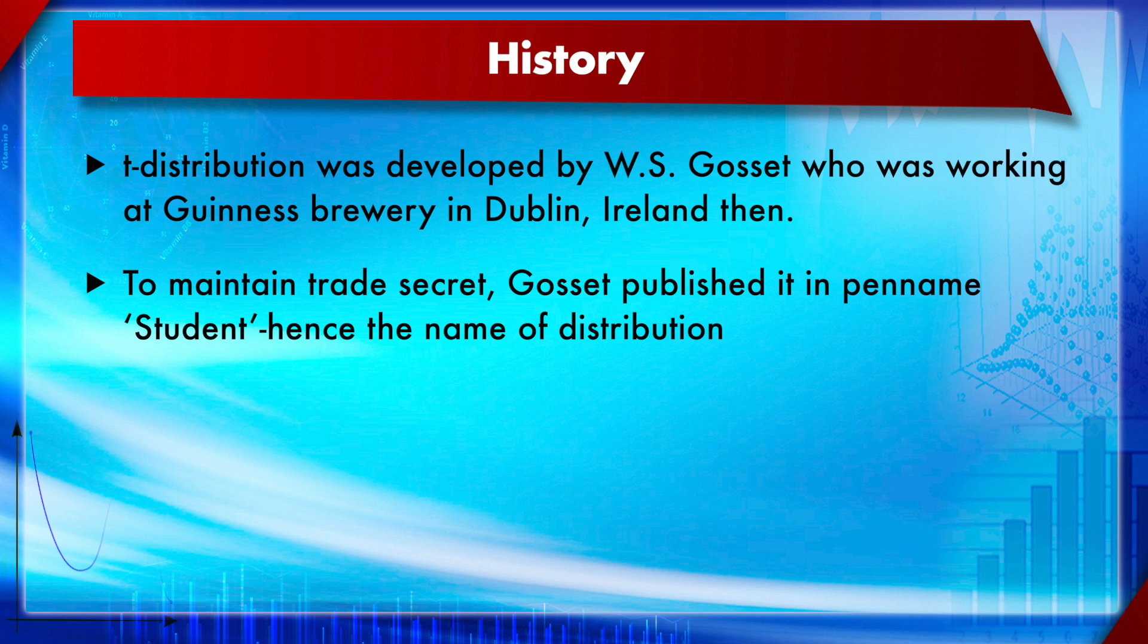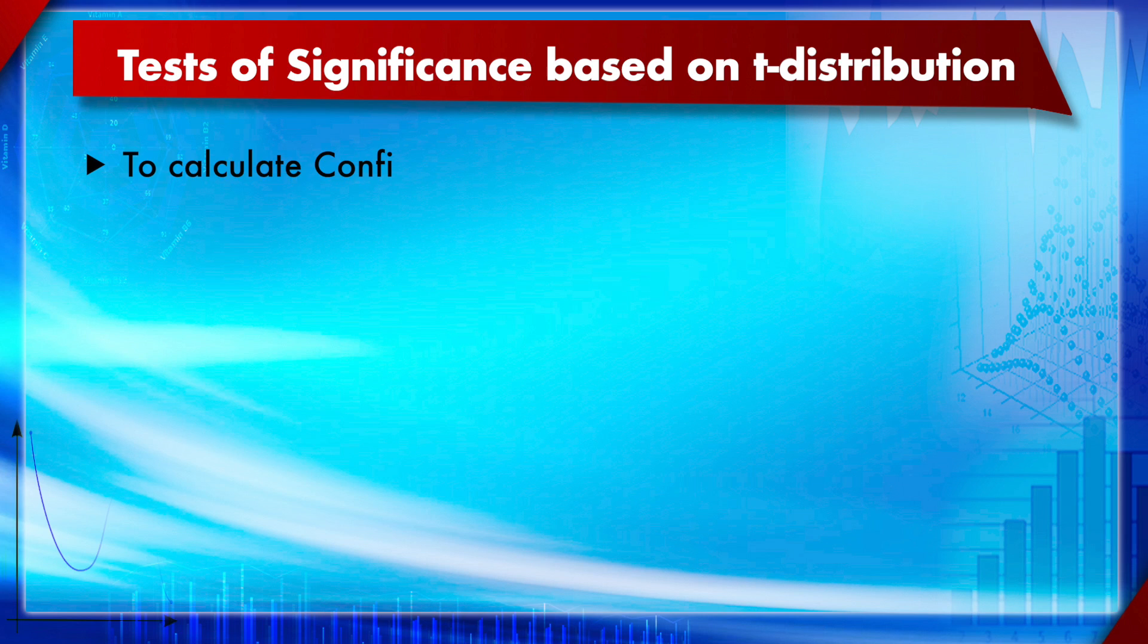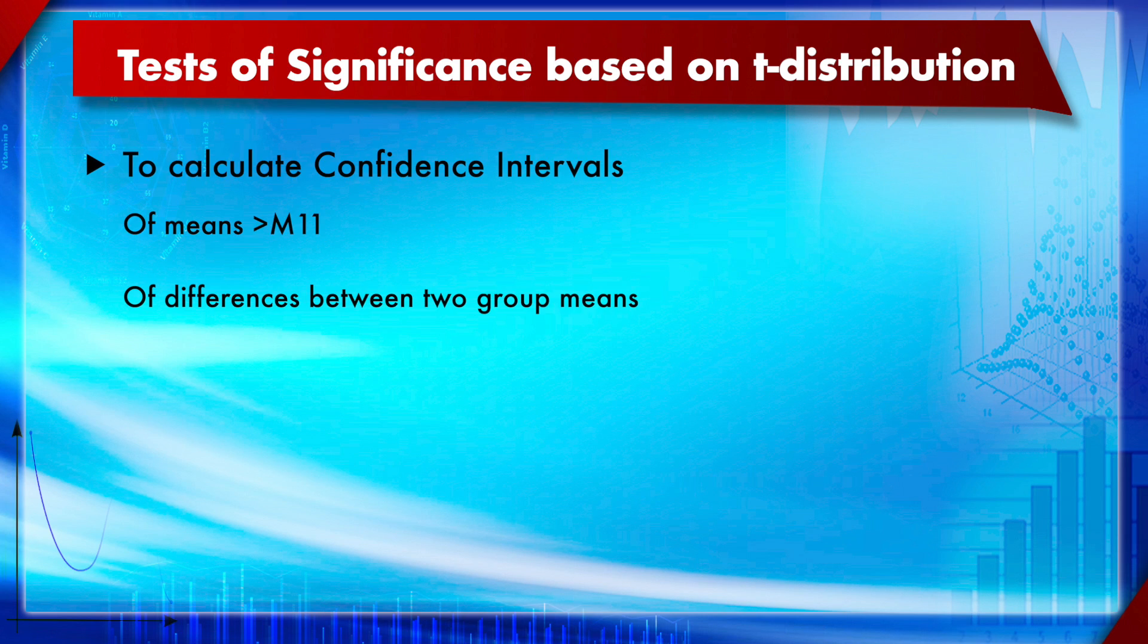The tests of significance based on t-distribution—there are of course a lot of tests, of which we already know how to calculate the confidence interval of mean. We learned it in module number 11, and we can also do this for the differences of means between two group means. We are going to do that in our next session of this module.